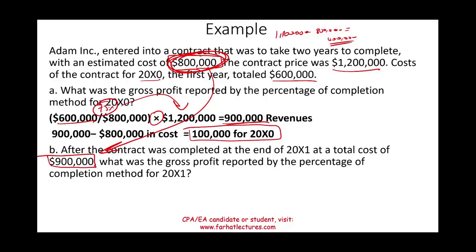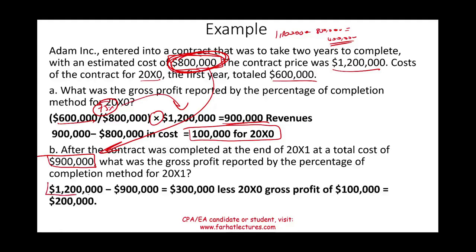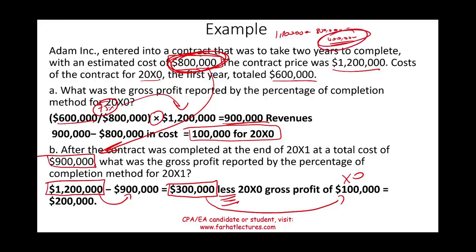After the contract is completed in 20X1, the total cost turns out to be $900,000 — higher than the original estimate due to rising material prices or labor shortages. The total gross profit for the project is now $1.2 million minus $900,000, which equals $300,000. Since $100,000 was already recognized in year 20X0, Adam reports the remaining $200,000 in gross profit in year 20X1.